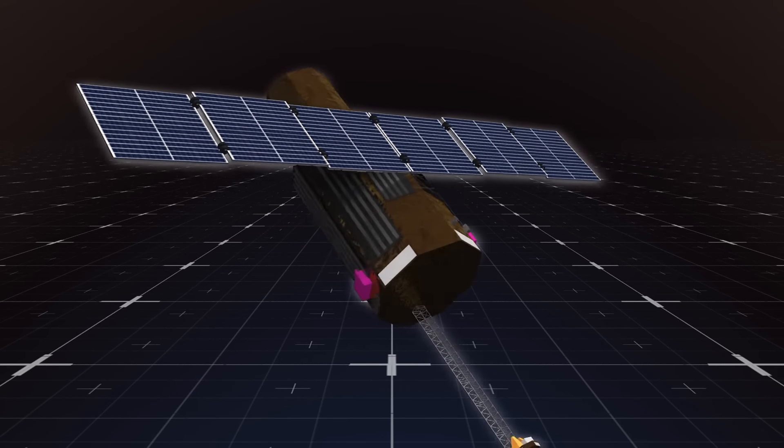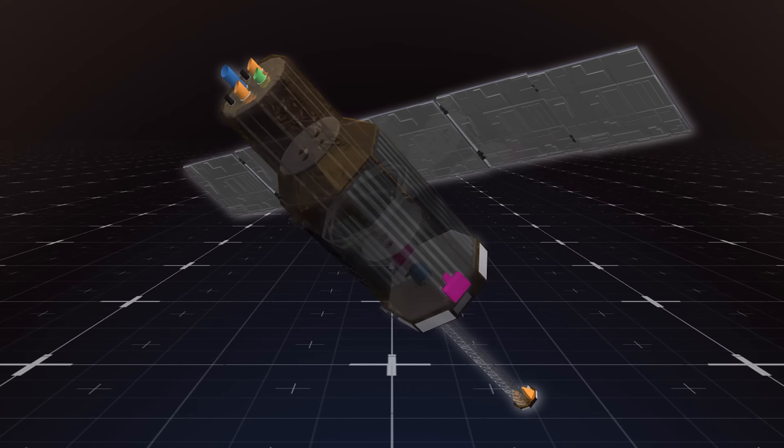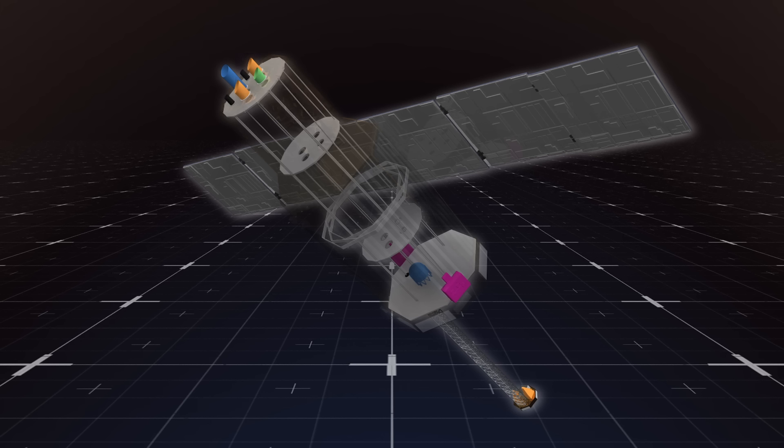The Astro-H satellite was equipped with four state-of-the-art instruments, including a hard X-ray imaging system, a soft X-ray spectroscopy system, a soft X-ray imaging system, and a soft gamma-ray detector.